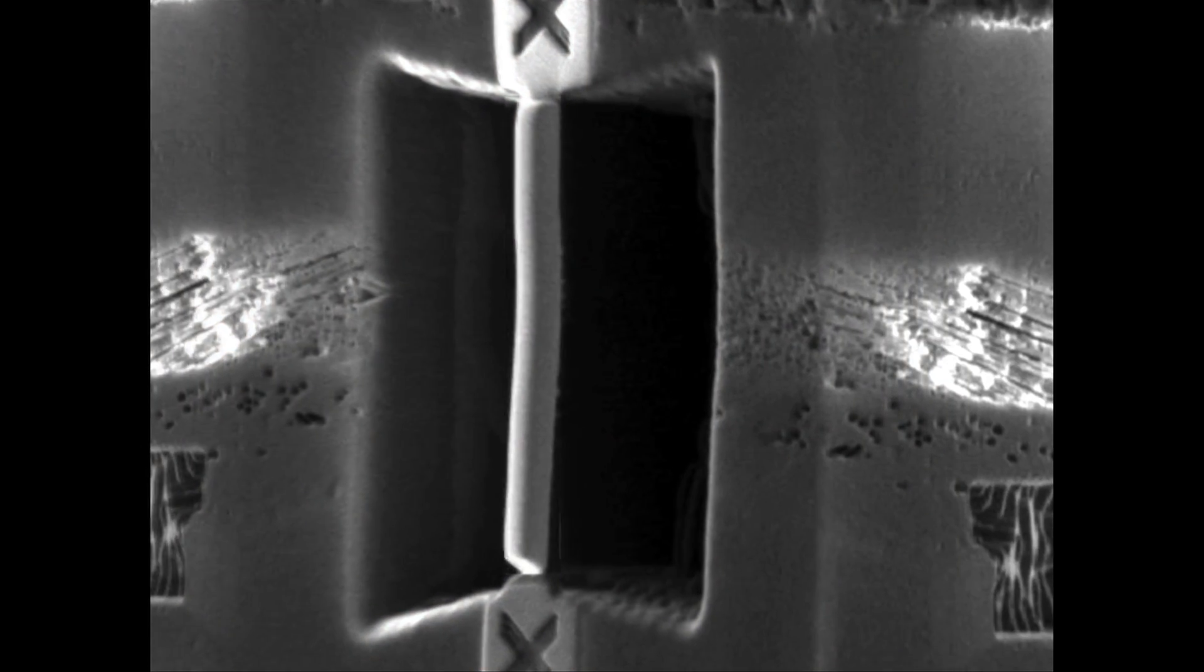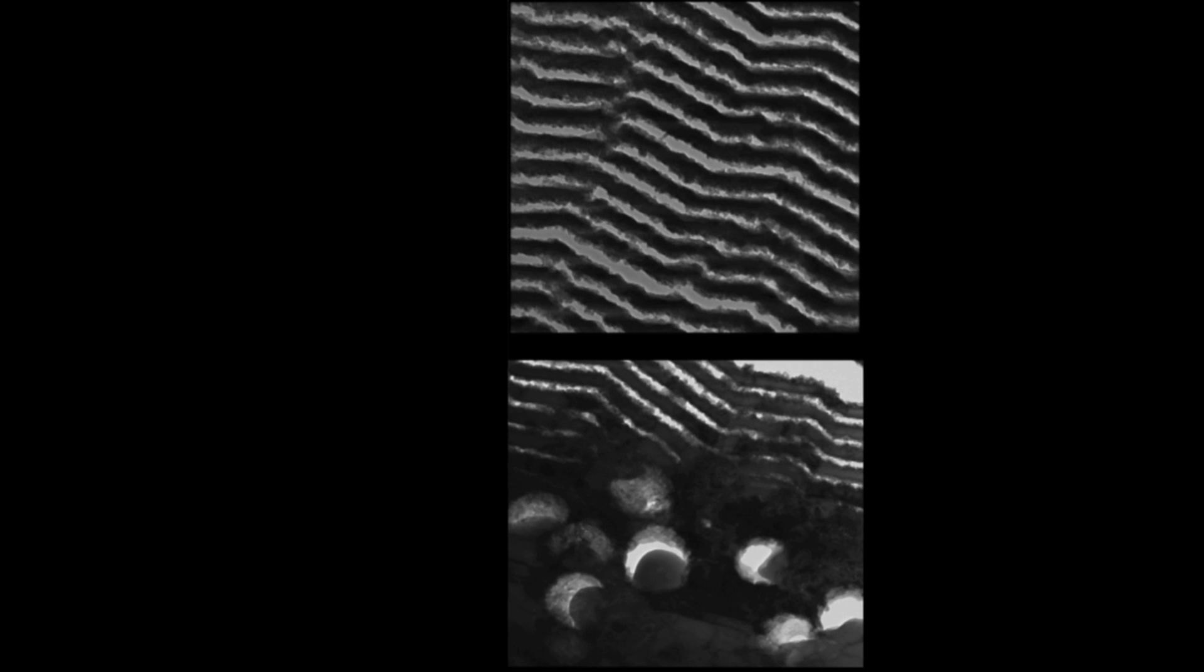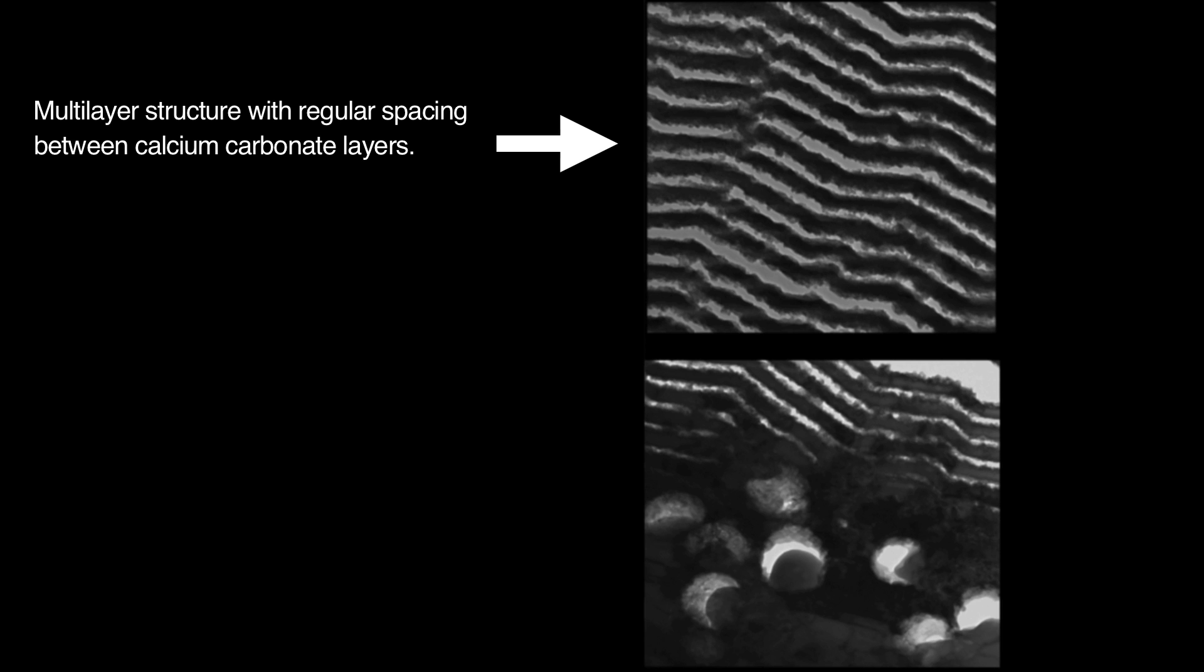However, about 30 microns beneath the shell surface, the researchers noted a stark difference. In these regions, the regular platelets of calcium carbonate morphed into two distinct structural features: a multi-layered structure with regular spacing between calcium carbonate layers resembling a zigzag pattern, and beneath this, a layer of randomly dispersed spherical particles.